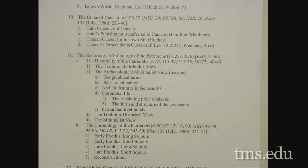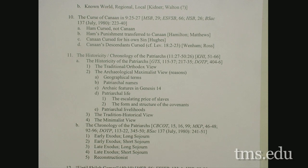My answer is: Noah at this point, on the basis of what had taken place, is given insight by the Spirit of God to speak as a prophet. 'Cursed be Canaan — a servant of servants he shall be to his brothers.' He also said, 'Blessed be the Lord, the God of Shem, and let Canaan be his servant. May God enlarge Japheth and let him dwell in the tents of Shem, and let Canaan be his servant.' Canaan is to be a servant, to come under the dominion of Shem. But why Canaan instead of Ham?